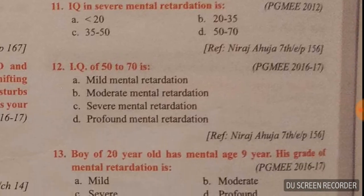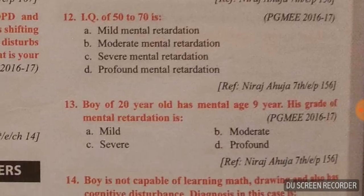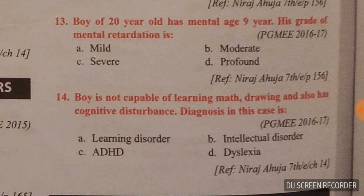Question number eleven: IQ in severe mental retardation. To explain all four options: 50 to 70 is mild mental retardation, 35 to 50 is moderate mental retardation, 20 to 35 is severe mental retardation — option B — and less than 20 is profound mental retardation. Question number twelve: IQ of 50 to 70 is mild mental retardation, option A is the right answer.